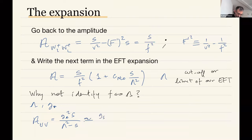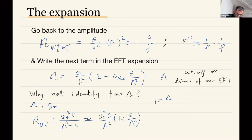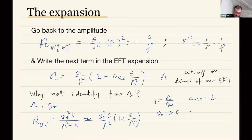Expanding this for low values of s gives g*²/Λ² times (1 + s/Λ²). Making a correspondence with our EFT expression, we see that F = Λ/g*, and Λ is Λ, but c_NLO equals one in this case. This tells us that the scale F can be — if the physics is weakly coupled — much larger than Λ, the mass of any new particles. We've actually seen this happen before: Fermi's theory was pointing at a scale of 246 GeV, but the W boson showed up at 80 GeV because it's a weakly coupled theory.